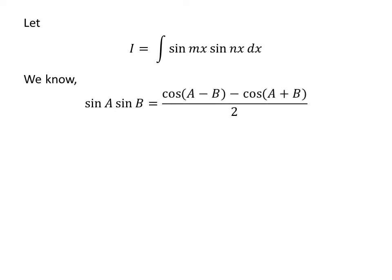We know the trigonometric identity: sin(a) times sin(b) is equal to cos(a − b) minus cos(a + b), all upon 2. The video appearing in the upper right corner explains the proof of this identity, and the link has also been given in the description section.